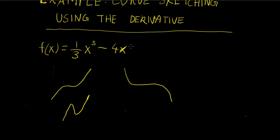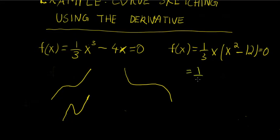So let's go ahead and set this function equal to 0. If we set f(x) equal to 0, we can factor. So we have f(x) equals, we'll pull out 1/3, 1/3 x. Here we'll have x² - 12 = 0. So this is equal to 1/3 x times (x + √12)(x - √12) = 0.